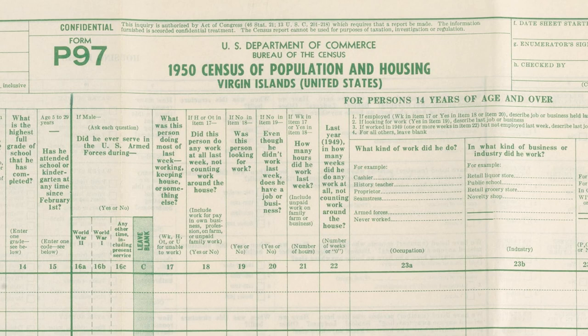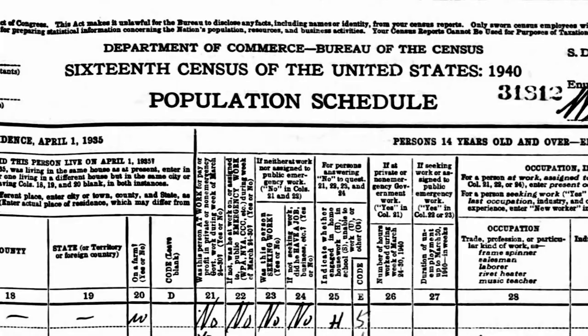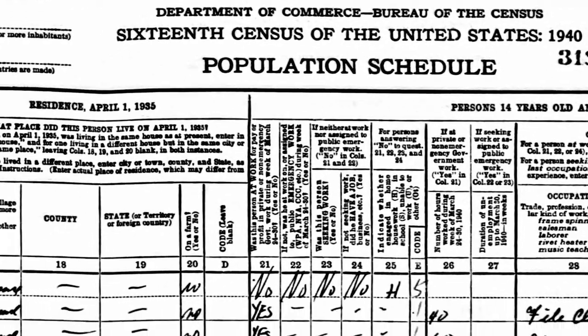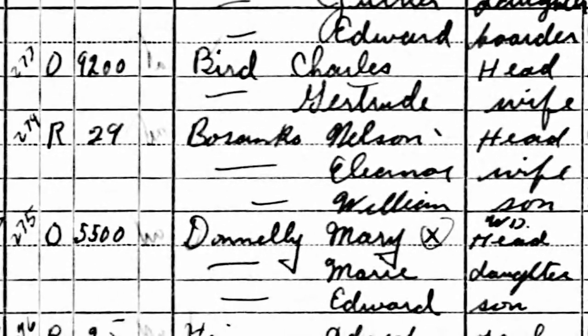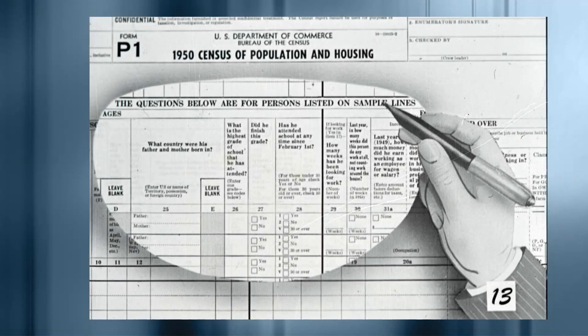There are also census schedules for Canton, Johnston, Midway, and Wake Islands. No other overseas residents are included. The United States had 19.1 million more people in 1950 than in 1940, the biggest increase the country had experienced up to that time. California led the way with 3.6 million more people, an increase of over 50%.